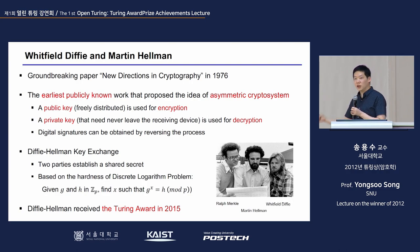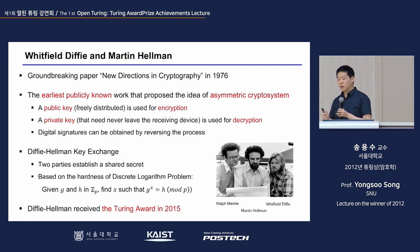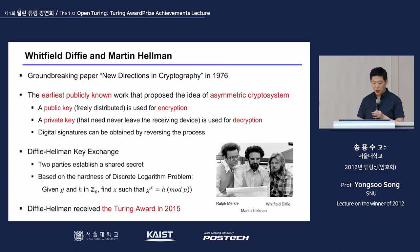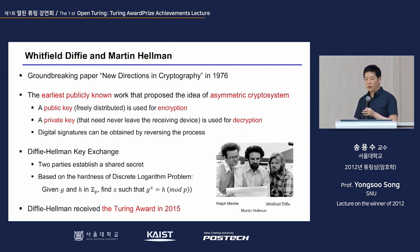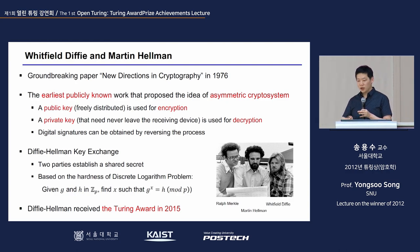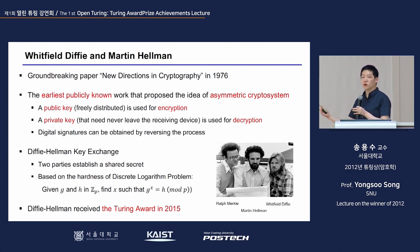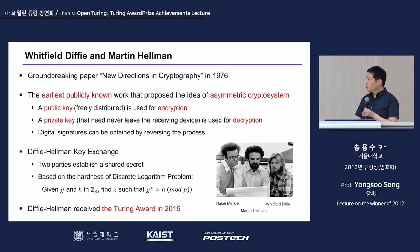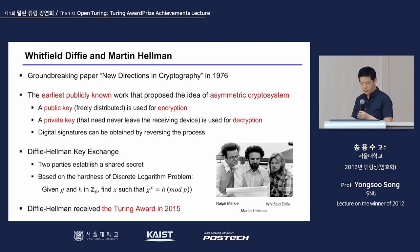Diffie and Hellman created the concept of a public key and private key and developed something called the key exchange algorithm. When two people want to share a secret, they don't have to meet in person — they can share keys. Mathematically, this is called the discrete logarithm problem. From this point, cryptography started to take on a more scientific and mathematical method. Diffie and Hellman received the Turing Award in 2015 for this work.